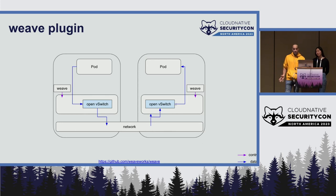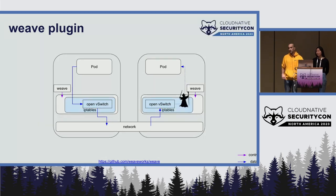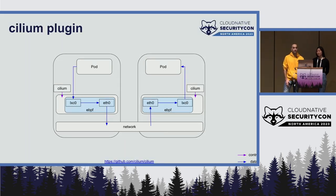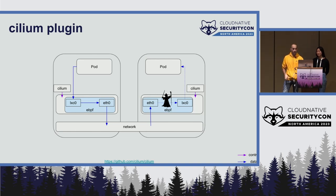Another big plugin is Weave, which relies on the internal Open vSwitch implementation for its data plane, and it also has network policy support using IP tables. And the big one, Cilium, uses eBPF for its connectivity. It uses a technology called Express Data Path that lets it short-circuit much of the network stack for a huge speed improvement. Network policy is implemented by eBPF programs in Cilium.